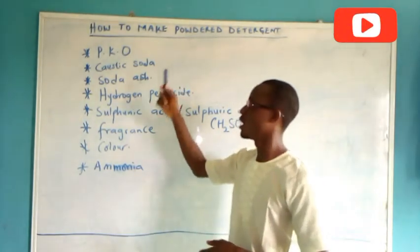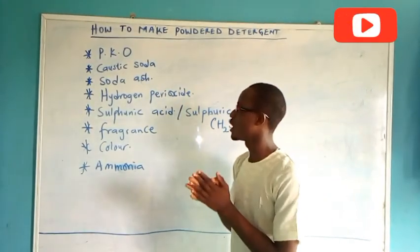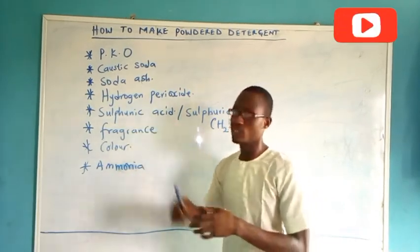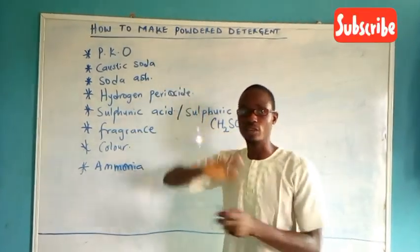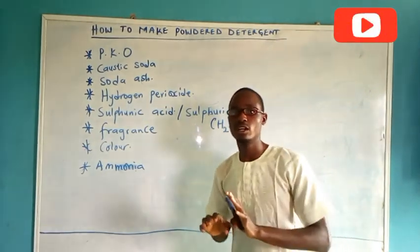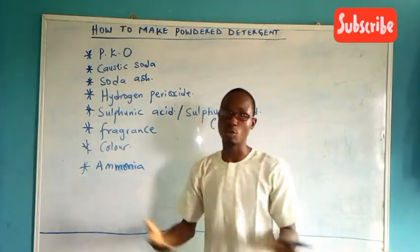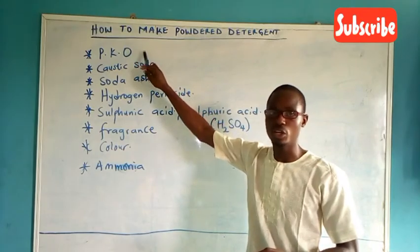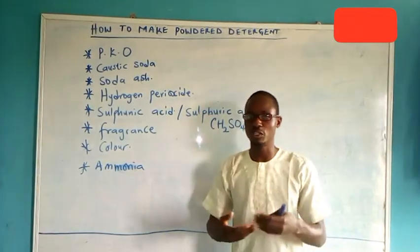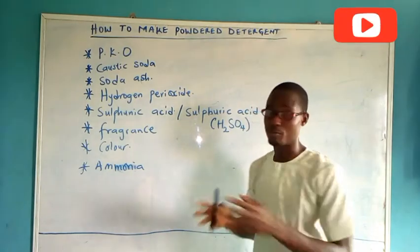Then we have caustic soda. Caustic soda is there to neutralize the acidic content of the mixture — the sulfonic acid content. There is a reaction called saponification where caustic soda is used for the hydrolysis of fat or oil. One of the oils is PKO. At the end of the day, it results in the formation of soap, which we then convert into powder.